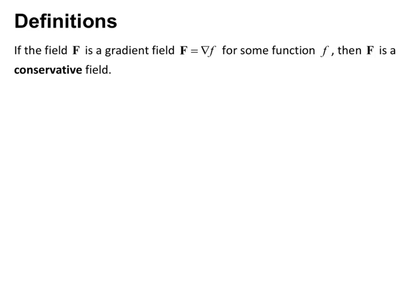Now we need some definitions in order to continue with this section. If the field F is a gradient field, so that capital F equals del lowercase f for some function lowercase f, then capital F is a conservative field. In other words, a conservative field is a gradient field.